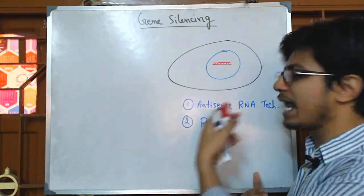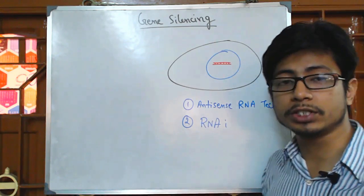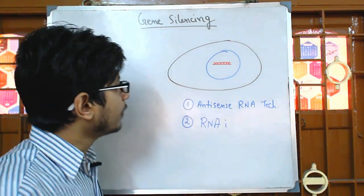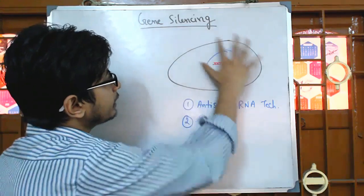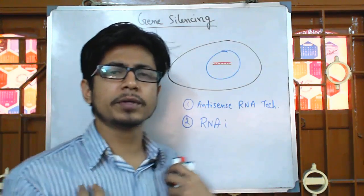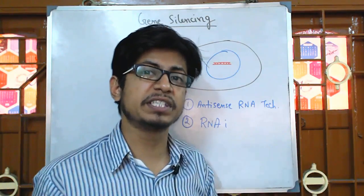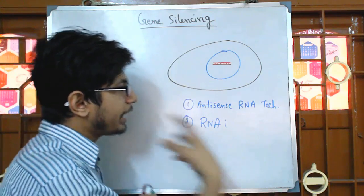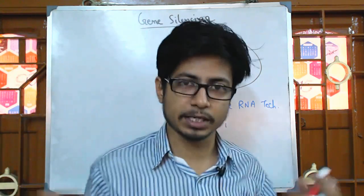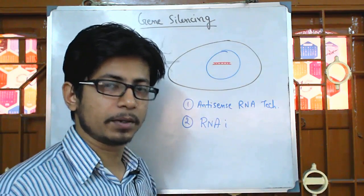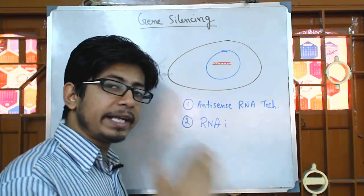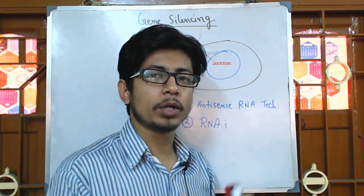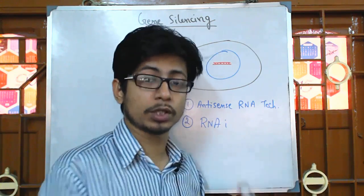I am going to talk about the difference between antisense RNA technology and RNAi technology in silencing a gene. Normally in our body, we encounter a lot of reactive oxygen species, which are creating harm in our body all the time. To prevent against those reactive oxygen species, we need an important enzyme — SOD, superoxide dismutase.